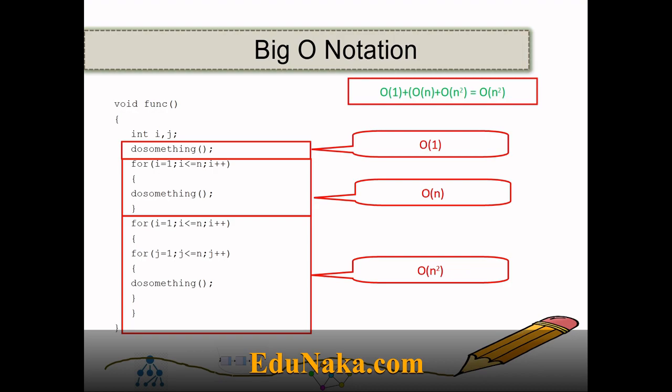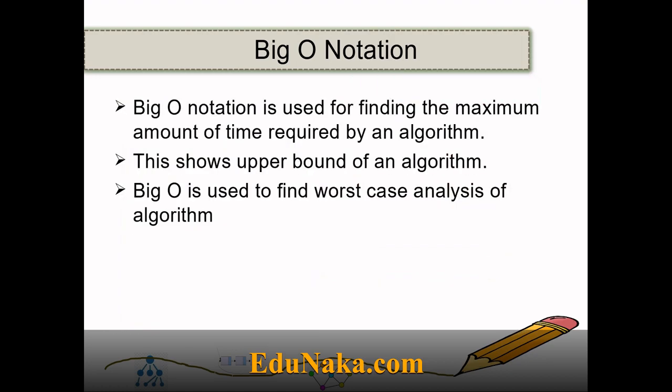O(1) is very small compared to O(n²), and similarly O(n) is too small compared to n². So we neglect the lower-order terms and take O(n²) as the highest term — the time complexity of that particular function.